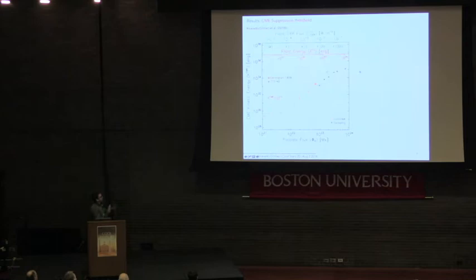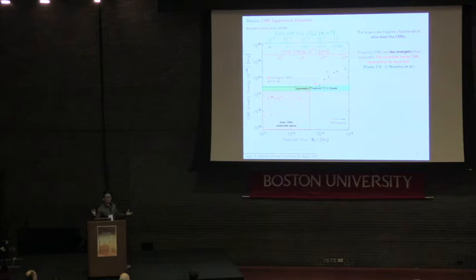What we are interested in is this suppression threshold. You have here the kinetic energy of the CME and the poloidal flux. You have some of the confined events, the escaping events, and two historical events for the sun. This is the solar parameter space, and we believe somewhere around here there's a suppression threshold for this particular configuration. The large-scale field slows down all the CMEs. The escaping CMEs are less energetic than expected. The magnetic suppression would mitigate all the low energy and small moderate CMEs, and only the very big ones will be able to escape. This is what we're working on right now, trying to get large-scale complexity and if there's any connection with superflares.